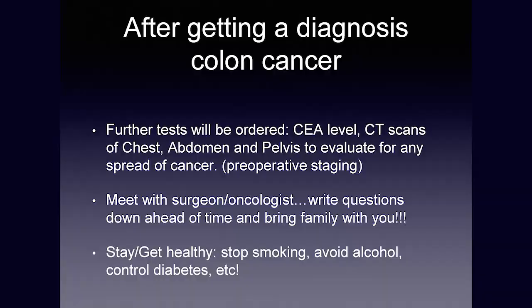We aim for cure as much as we can. There are instances where we know it's not going to be a cure if there's a lot of spread to other organs because we can't get all that tumor out. Some other important things: stop smoking, as that will help with recovery from surgery. Also avoid alcohol and control diabetes. When you go to the office visit to meet with the surgeon, I always recommend bringing family and writing down your questions ahead of time.